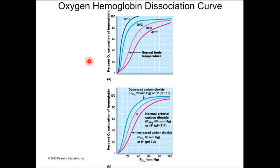There are going to be factors that change the rate at which things associate and dissociate, and those factors are going to be temperature, acid-base balance, and carbon dioxide concentration. Let's start with temperature because I think that one's relatively easy.